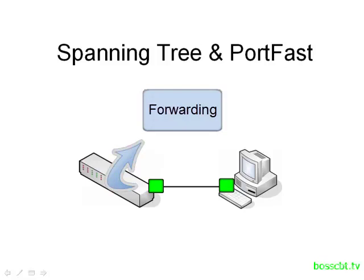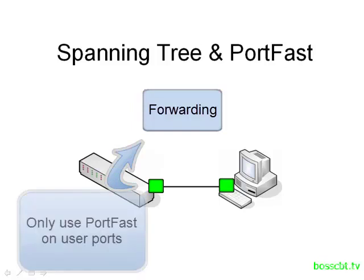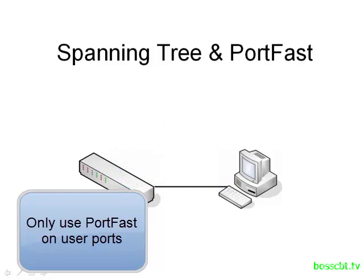Now this port is still participating in SpanningTree, so if any loops are detected on the port, it will be moved into a blocking state. However, since we're skipping the listening and the learning states, we only want to use PortFast on ports that have devices connected that are known not to cause loops — for instance, your standard desktop, perhaps an IP camera, a server, or something along those lines.